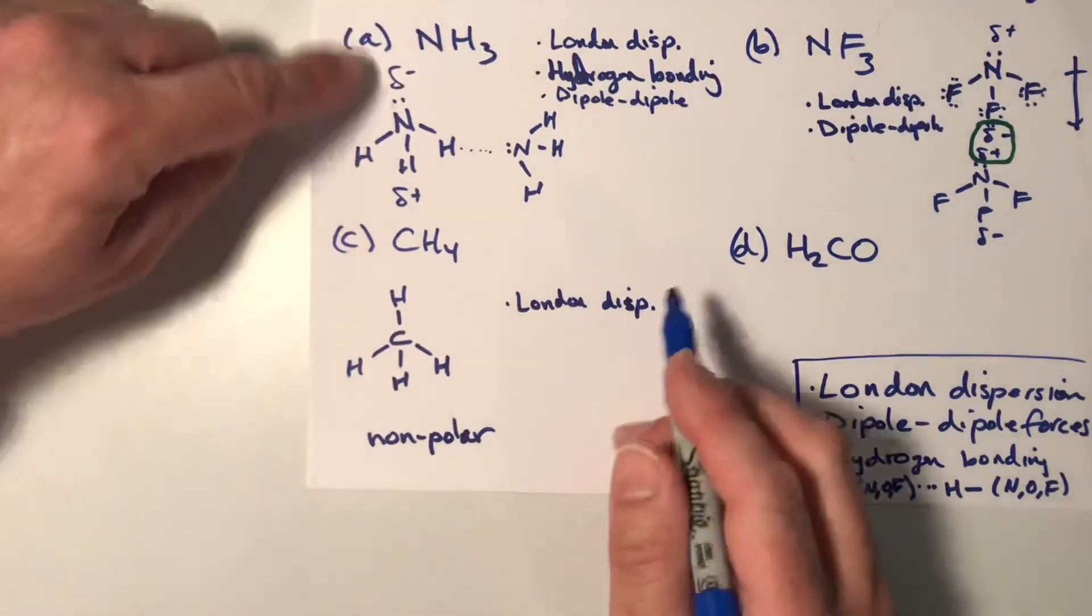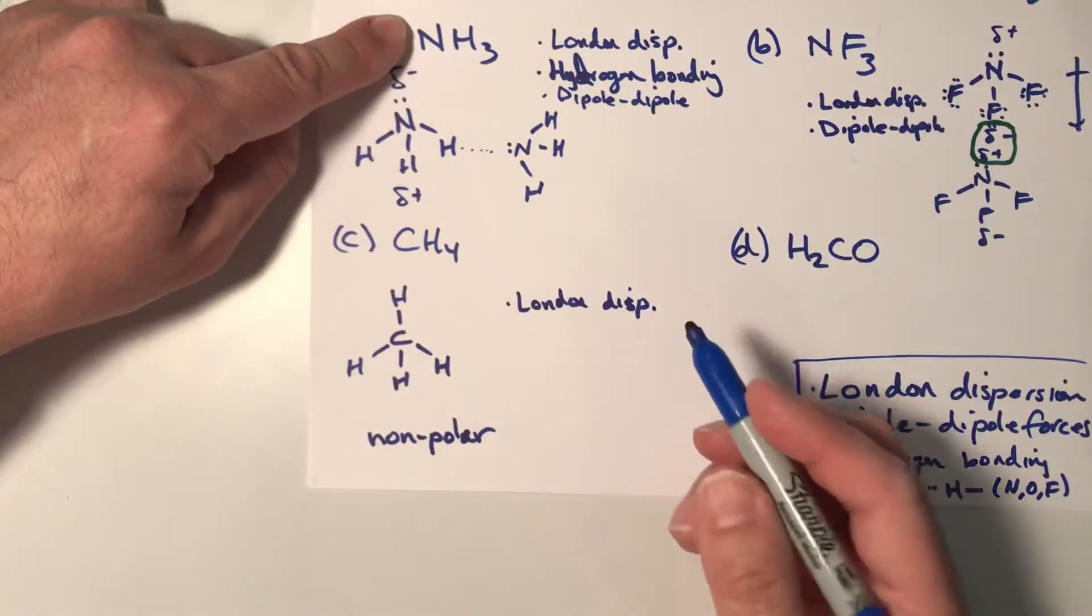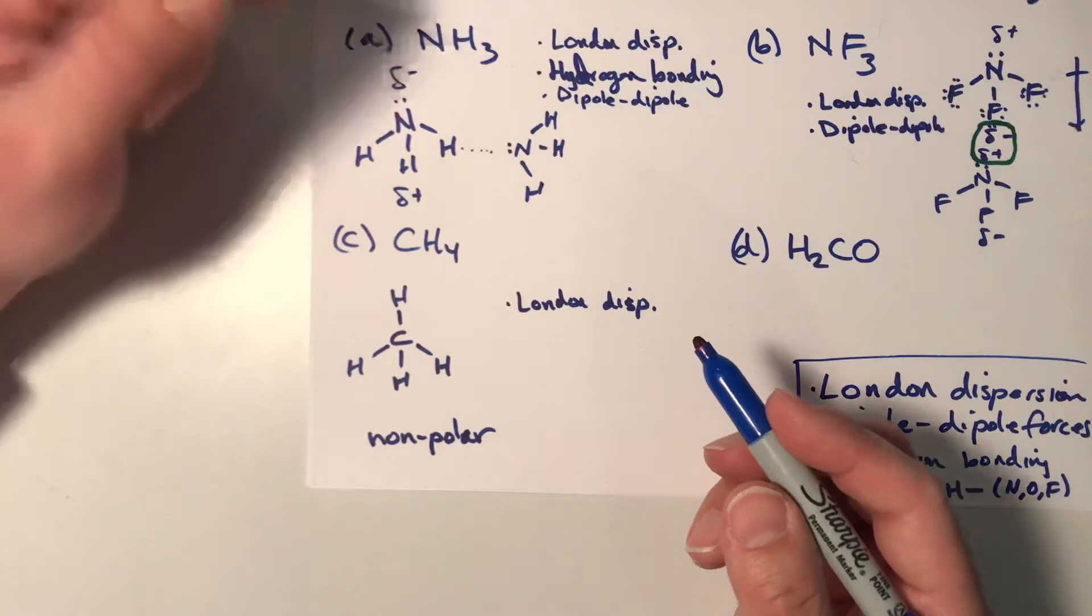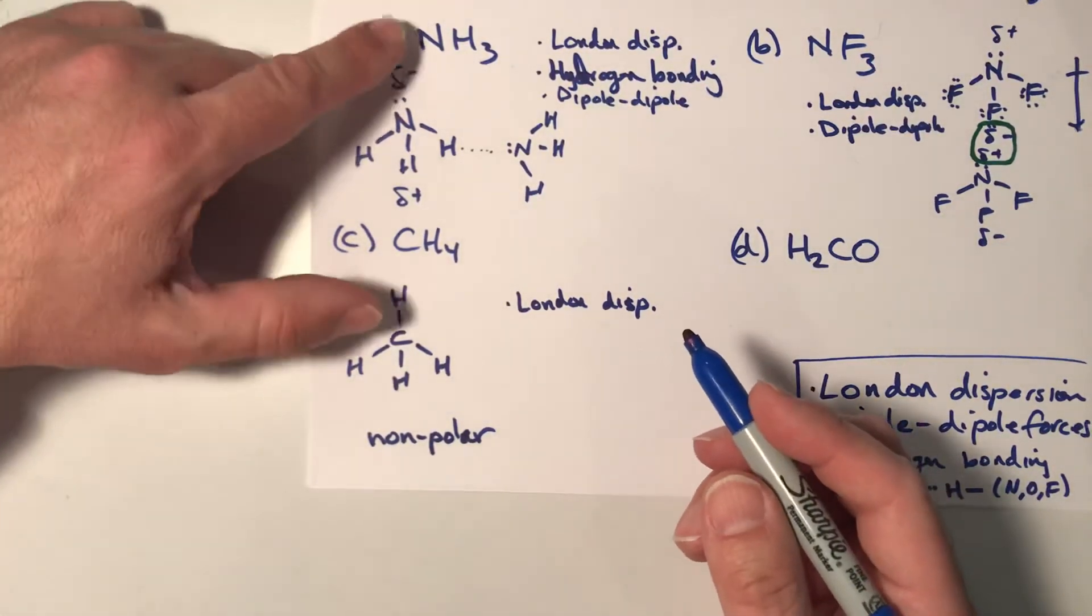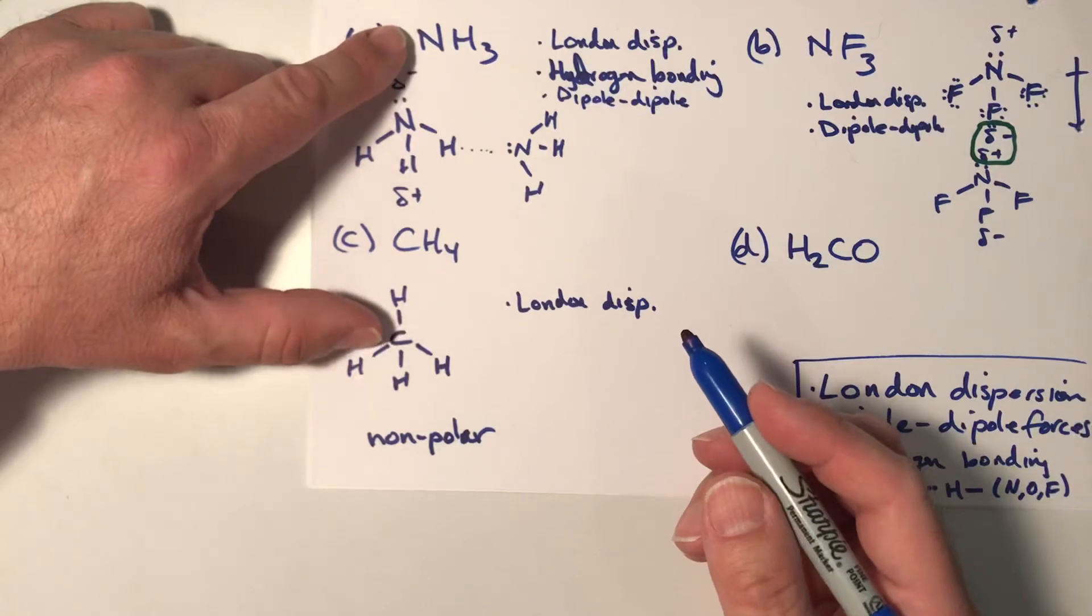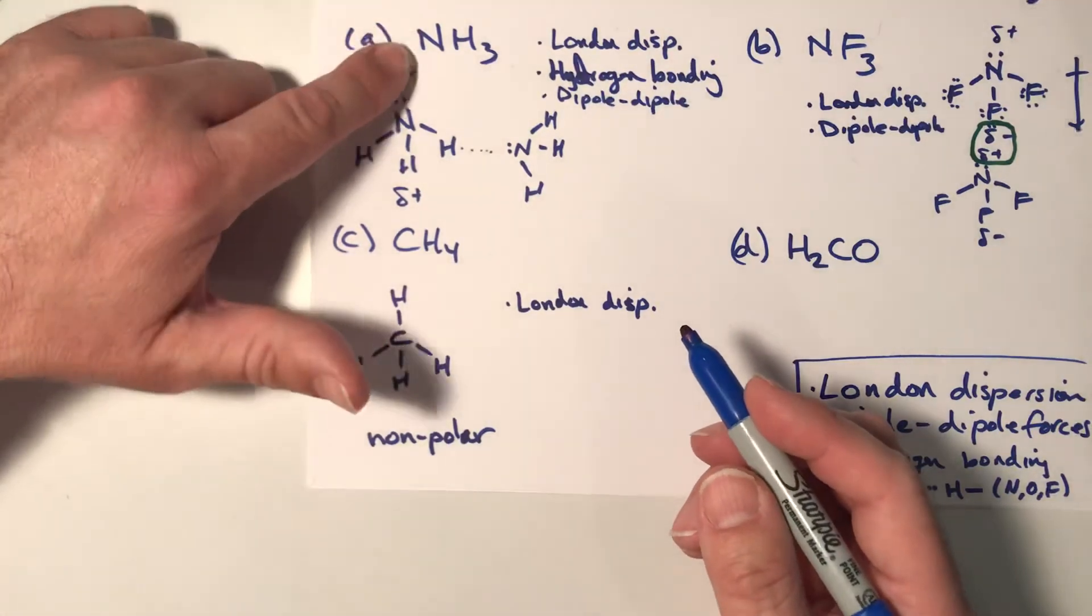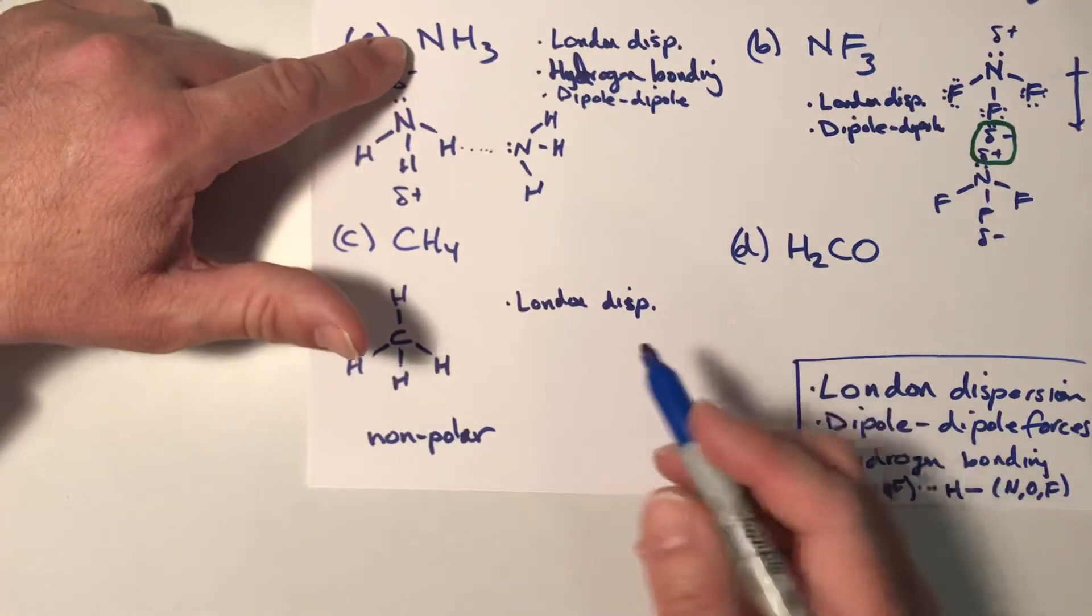And if you recall, this is CH4 and NH3 is one of the examples we used in class to talk about hydrogen bonding because NH3 ought to be similar in boiling point to CH4, but in fact, its boiling point is much higher, which we attribute to the presence of hydrogen bonding.